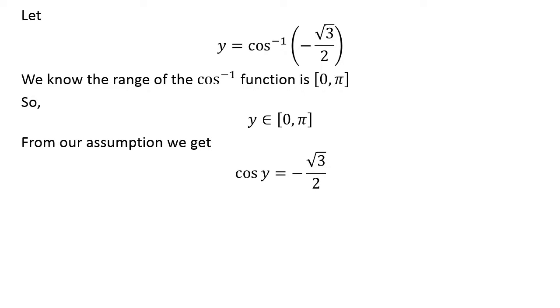By application of properties of inverse functions, we can rewrite the statement as cosine of y is equal to minus square root of 3 upon 2.